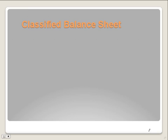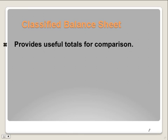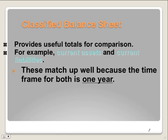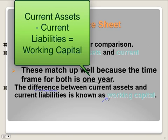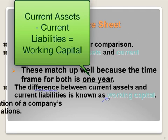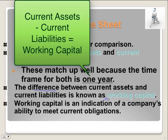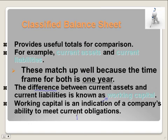We do some similar comparisons with our balance sheet as we did with our income statement, so this is a bit of review. Balance sheets provide useful tools for comparison — for example, current assets and current liabilities match up well because the time frame for both is one year. When you subtract current liabilities from current assets, we call this working capital. It is an indication of a company's ability to meet its short-term or current obligations, so if you have enough cash to pay off your current debts, you have a good working capital.